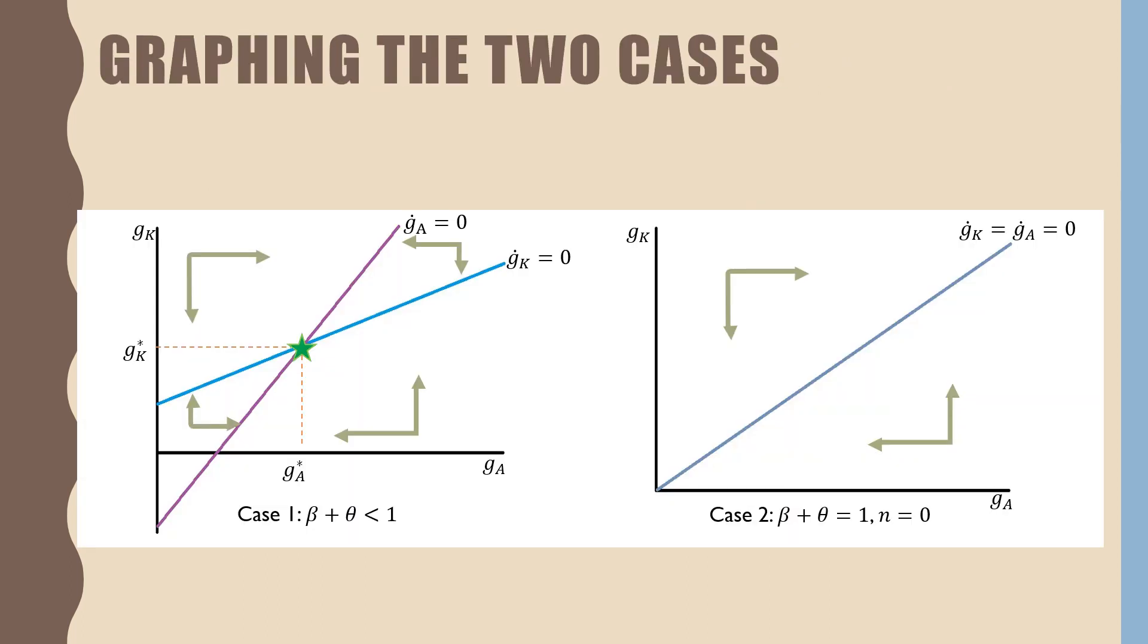For case number one, where beta plus theta is less than one, the forces of the phase diagram and the growth rates converge towards a single G of A star and G of K star. However, for case number two, these two lines are actually on top of each other. If you're below this line or above this line, we're going to move towards it, but you can't say that it's going to be a specific value. There's an infinite number of optimal solutions in this case.